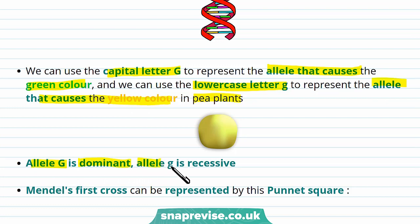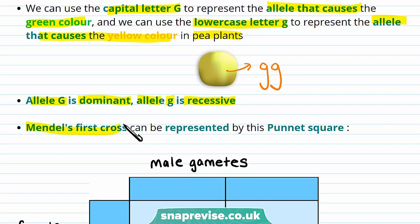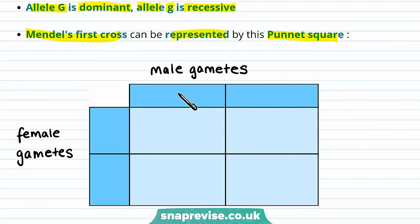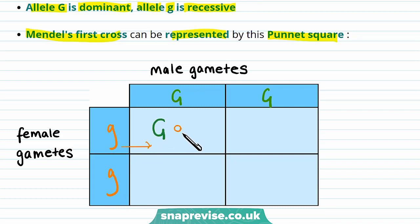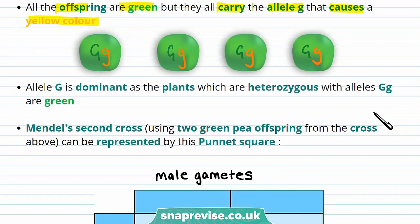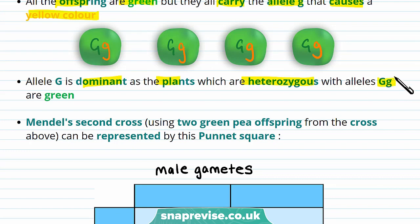In this case allele big G is dominant and allele small g is recessive. This means that a yellow pea plant would have to have the genotype little g little g. Mendel's first cross, where he crosses a green and yellow pea plant to get all green pea plants, can be represented by a Punnett square. The gametes of the green pea plant would be big G big G, and the gametes of the yellow pea plant would be little g little g. Once we fill in the Punnett square, the result is that all the offspring are green but they all carry the allele little g that causes the yellow colour. They all have the phenotype of being green and the genotype big G little g. Allele big G is dominant, as the plants which are heterozygous with alleles big G little g are green.